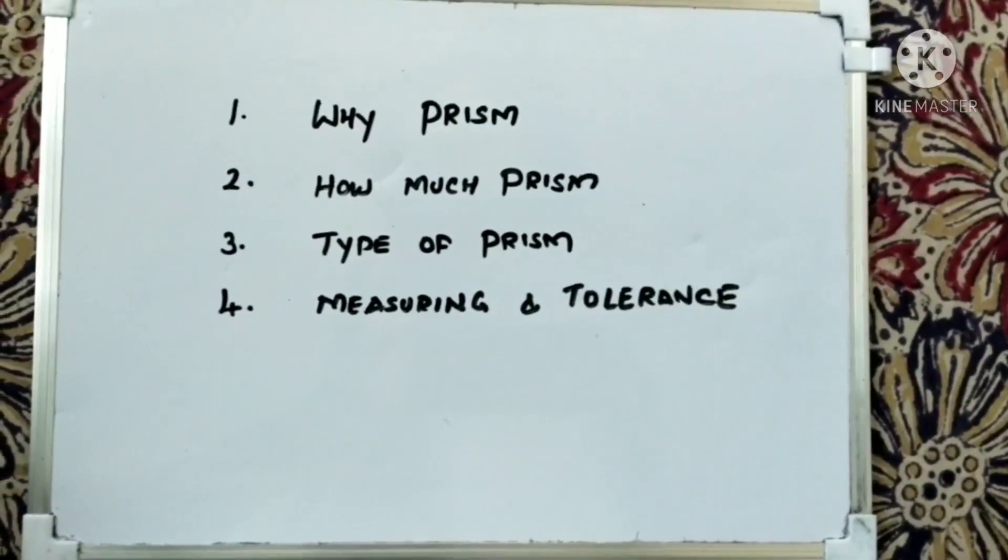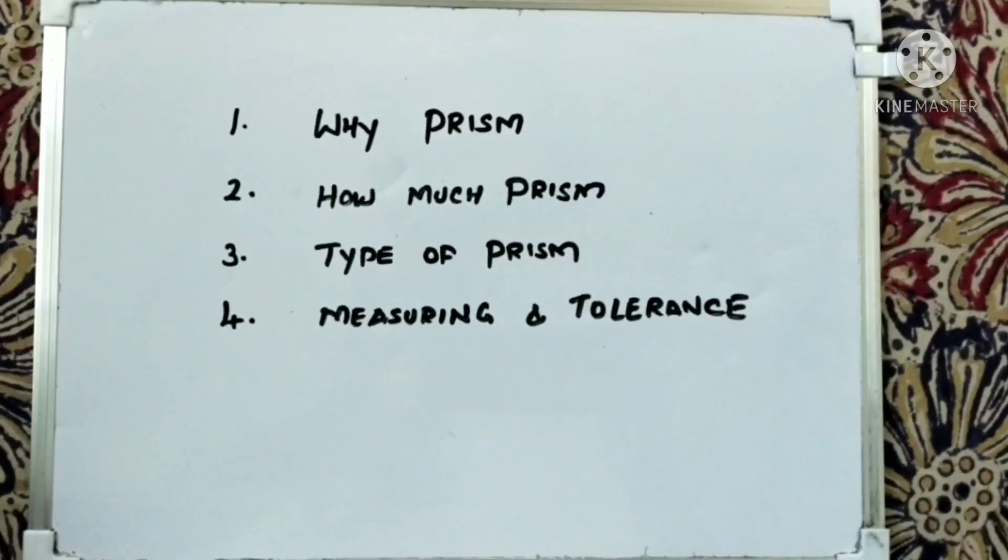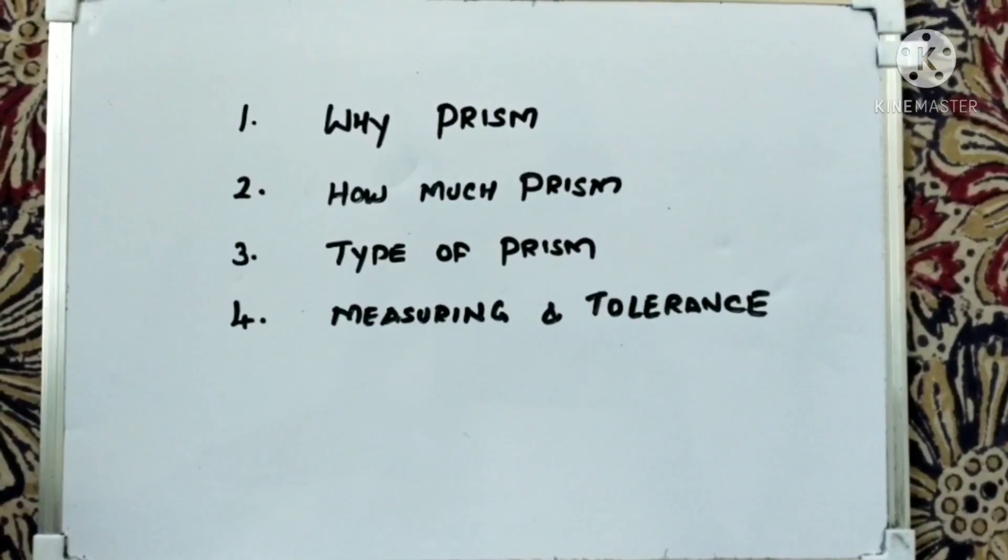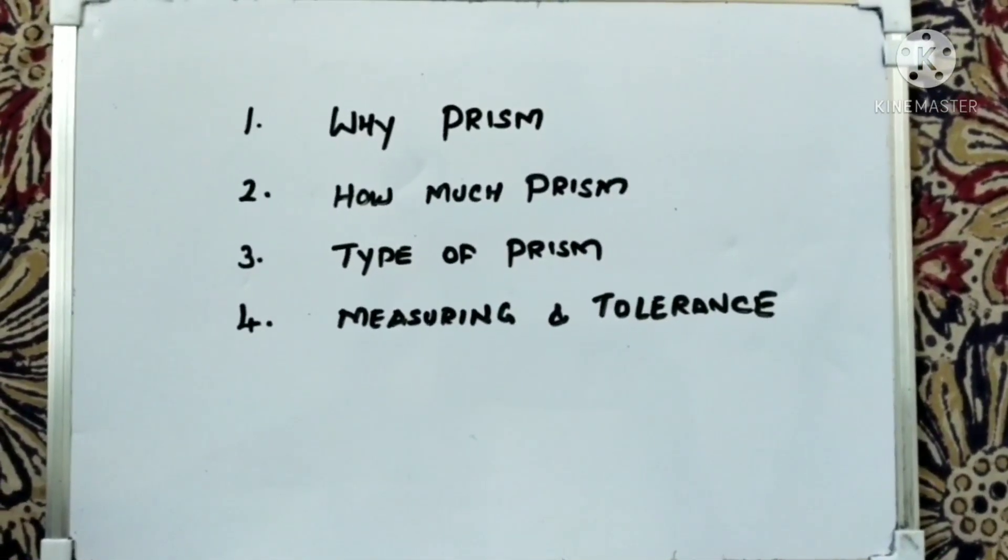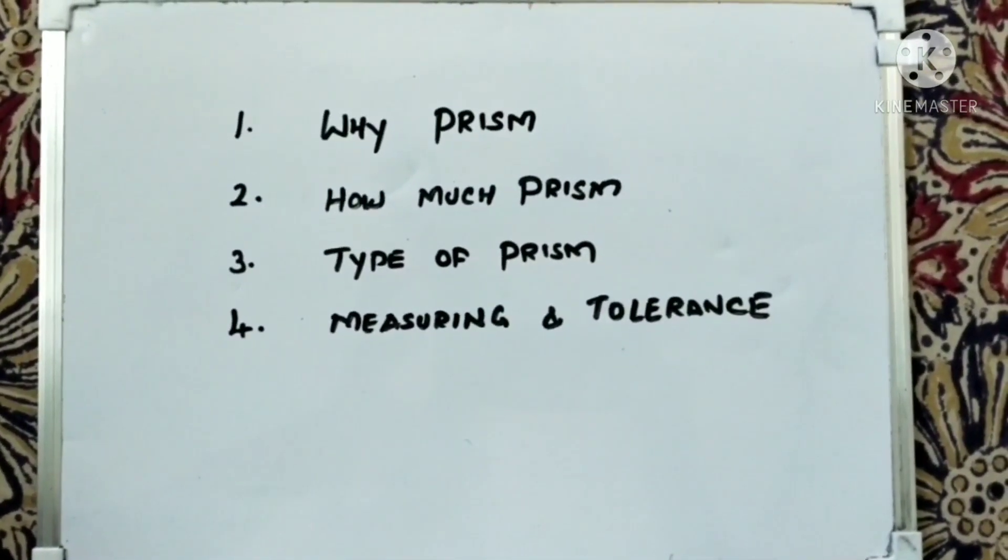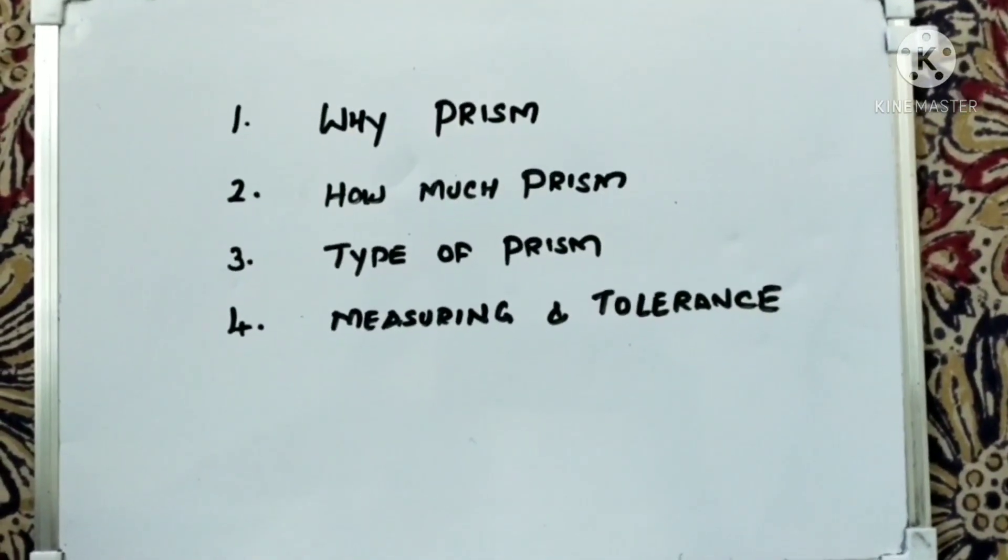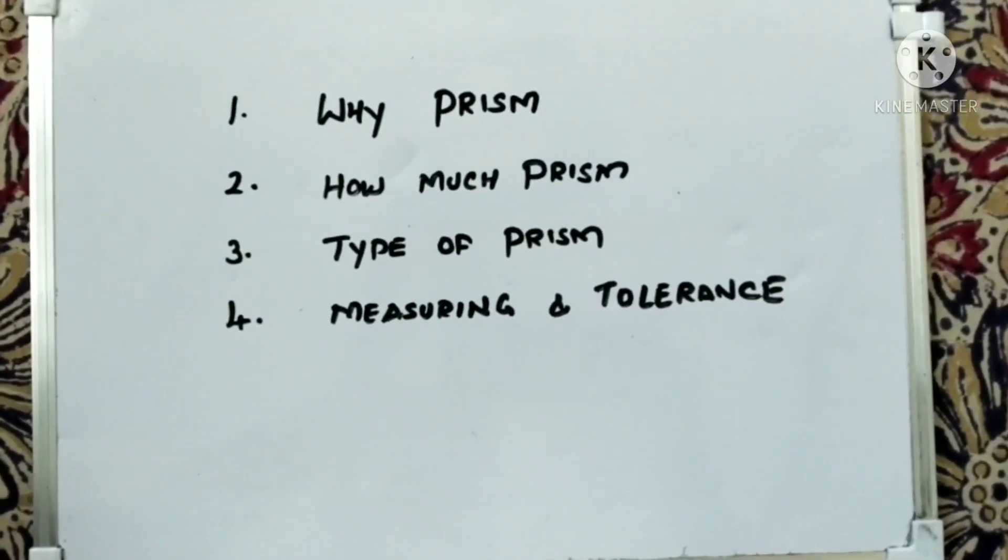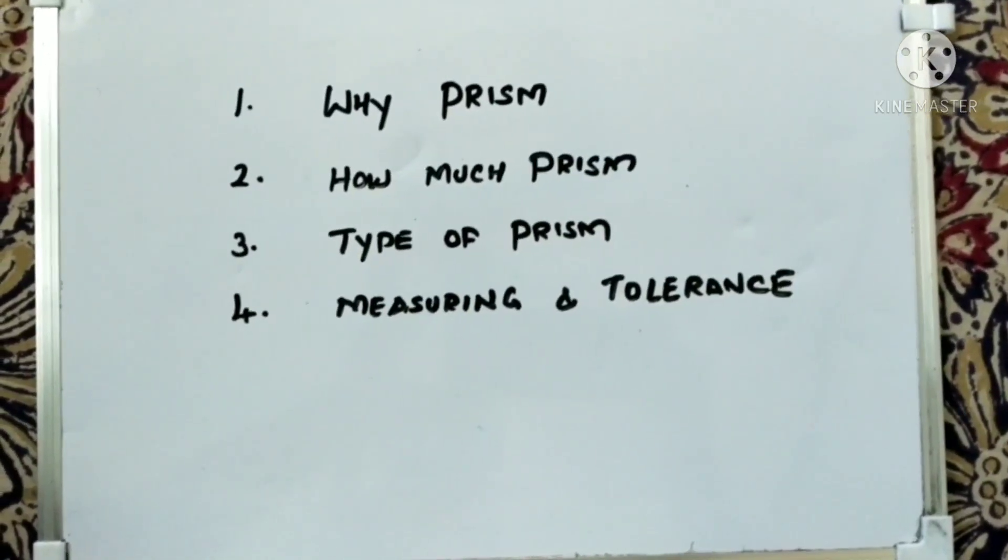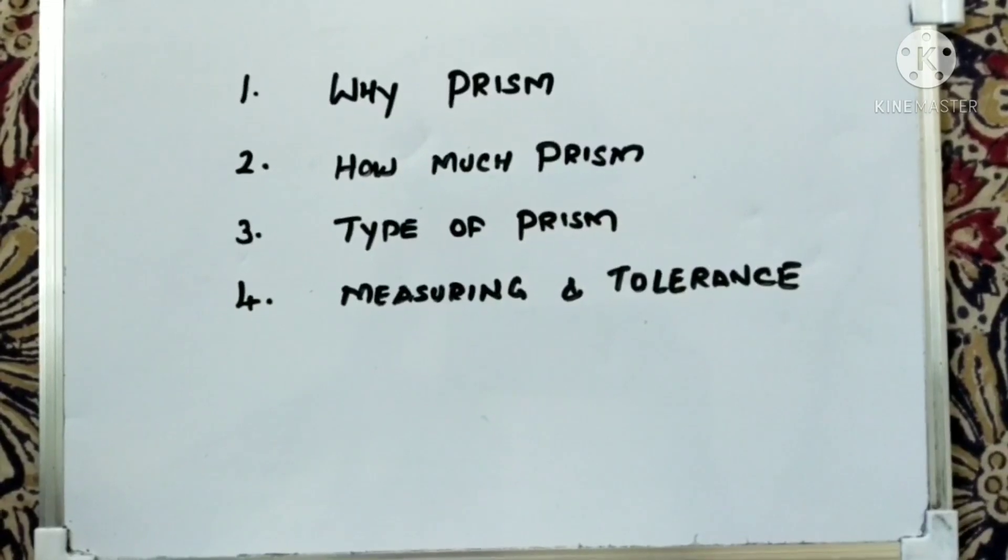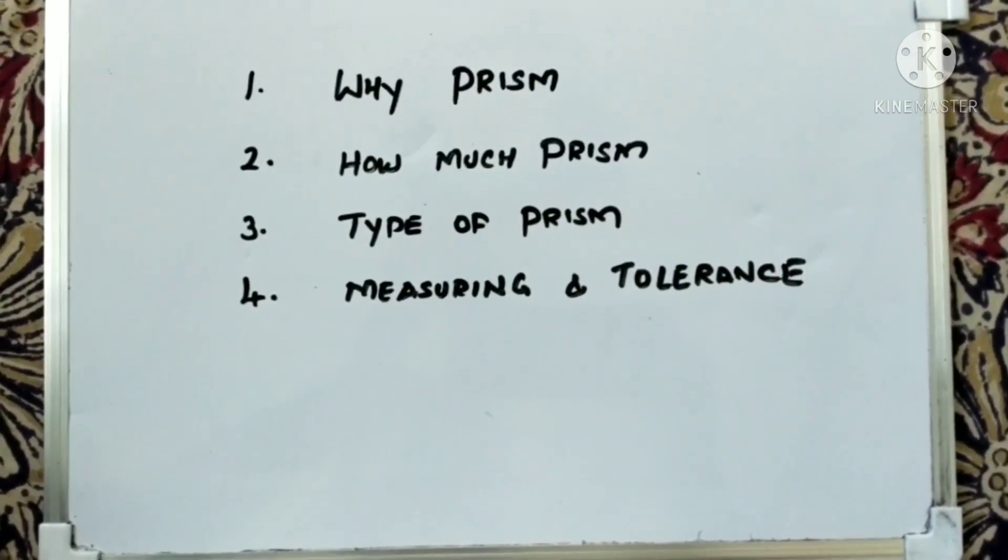The agenda for today's video covers four areas: why prism is grounded on a progressive lens, how much prism can be grounded, the type of prism that will behave in front of the eye when prism is grounded, and measuring the progressive lens prism and tolerance.